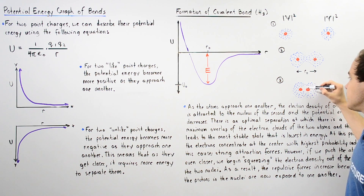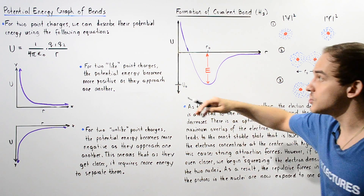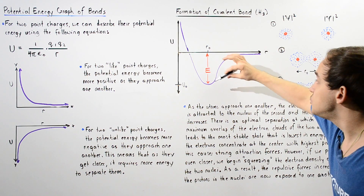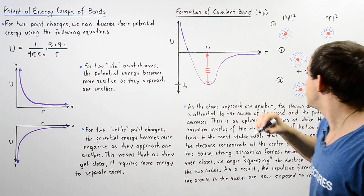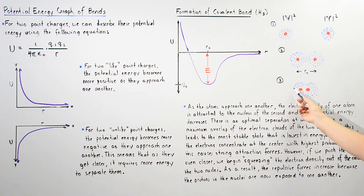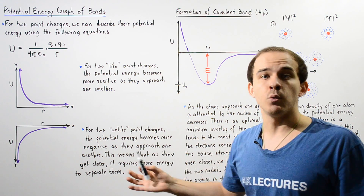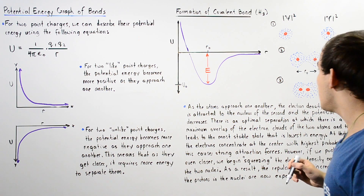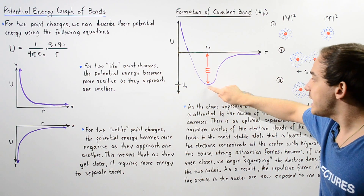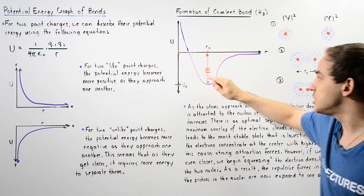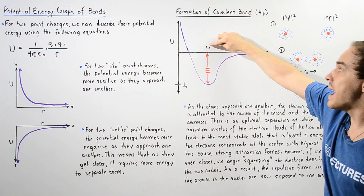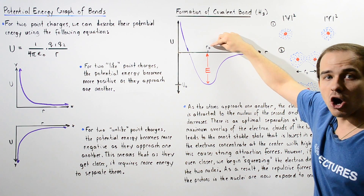Because we now have two like charges — as per this diagram — our energy will begin to increase. When we have two like charges, in this case two protons, that will increase the energy of our molecule. That's exactly why we see this increase in energy if we continue pushing our two atoms past the radius given by R-naught.